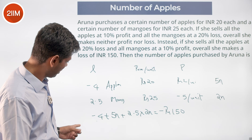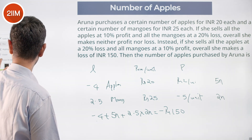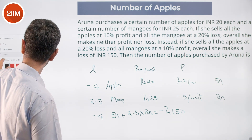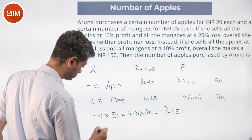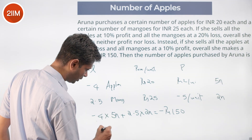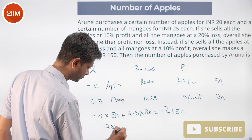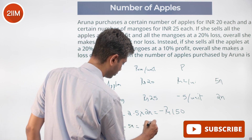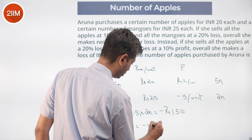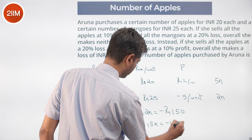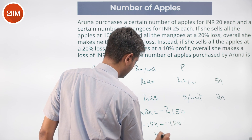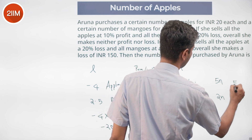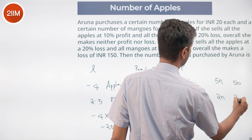Working through the equation: −4 × 5n = −20n, and 2.5 × 2n = 5n, giving −20n + 5n = −15n = −150. Therefore n = 10, meaning she buys 50 apples and 20 mangoes.